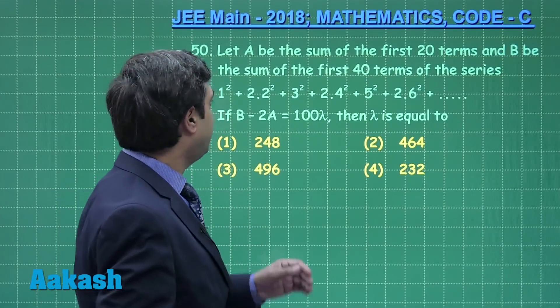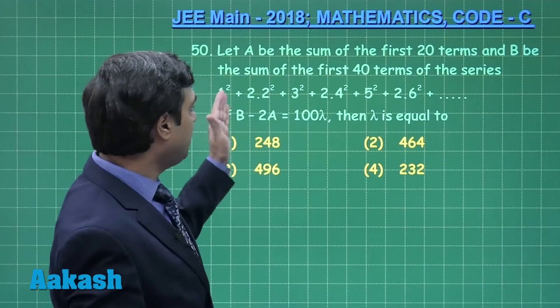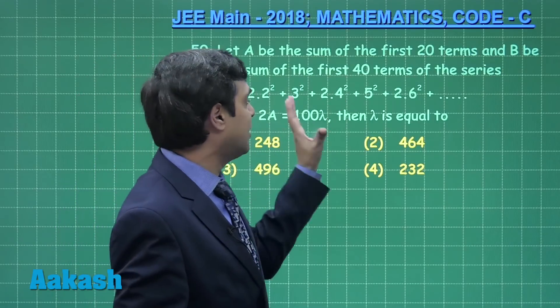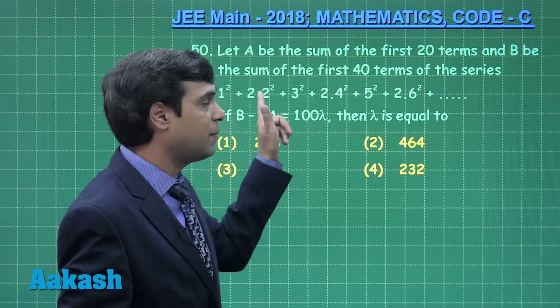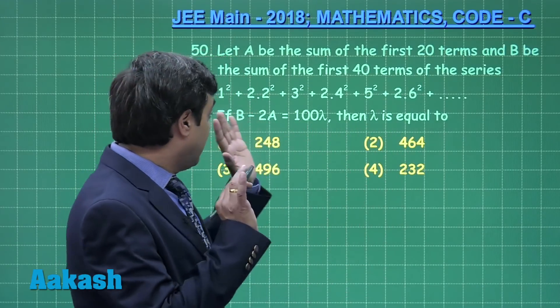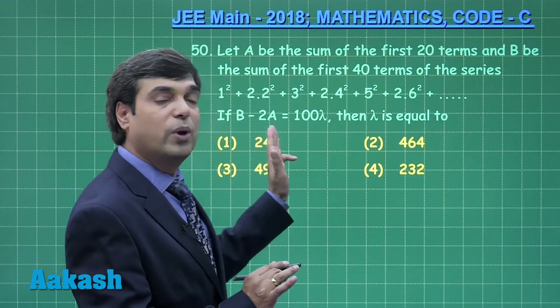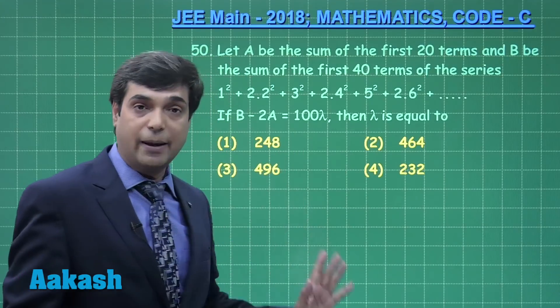Now, question number 50. Let A be the sum of the first 20 terms and B be the first 40 terms sum for the given series: 1² + 2(2²) + 3² + 2(4²) and so on. It is given B - 2A = 100λ. Find the value of λ.